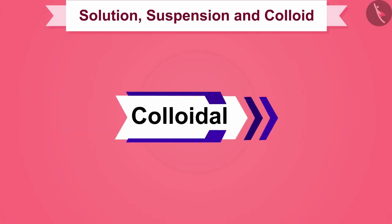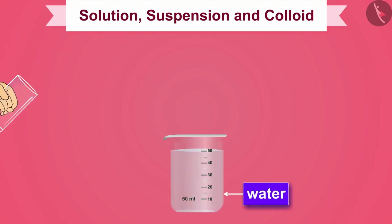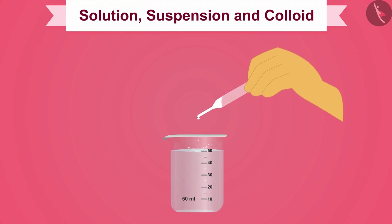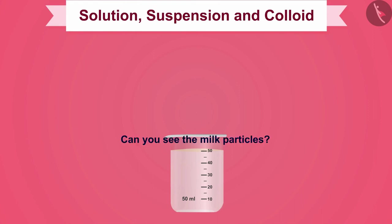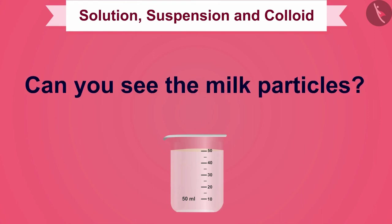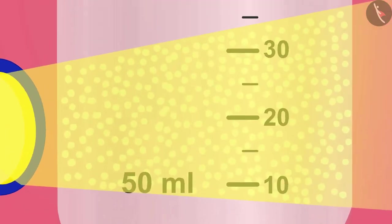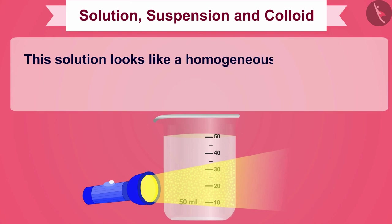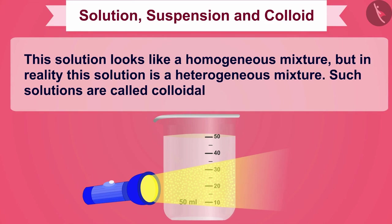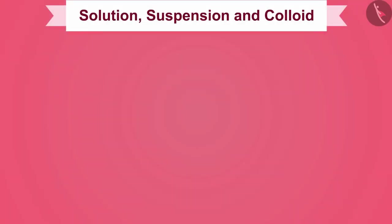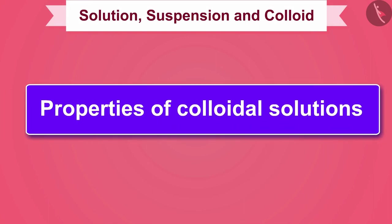Let us now learn about the last type: colloidal solution. Take water in a 50 ml beaker and add a few drops of milk to it. Milk particles spread evenly in water but you cannot see the milk particles with the naked eye. However, if we pass a light beam through this solution with a torch, the milk particles scatter the beam of light. Therefore, this solution looks like a homogeneous mixture but in reality it is a heterogeneous mixture. Such solutions are called colloidal solutions.